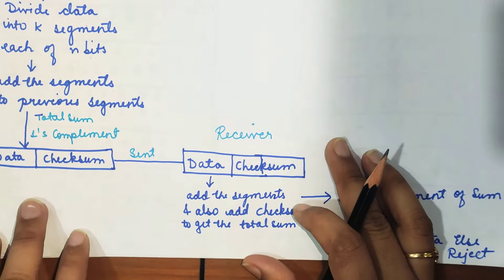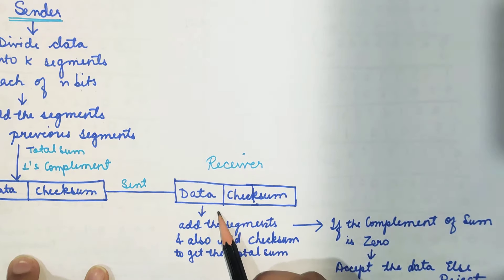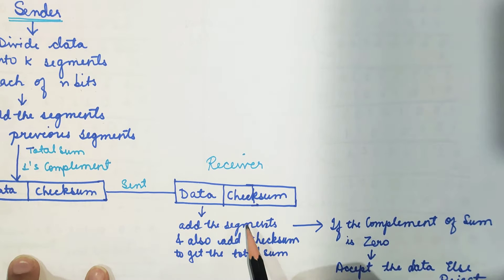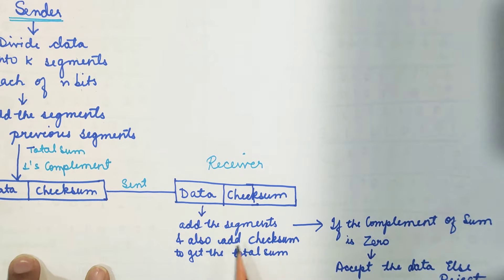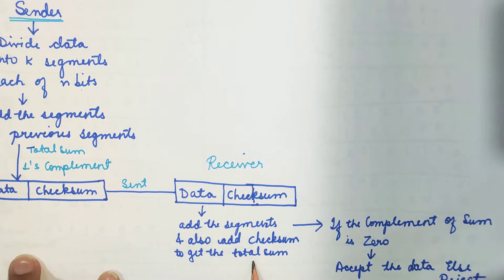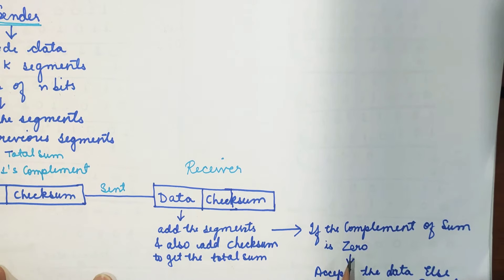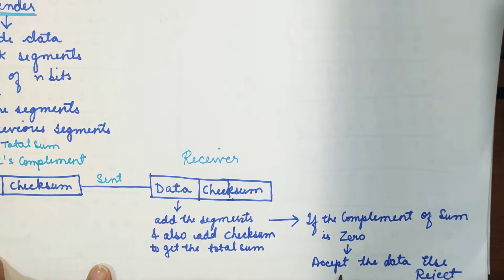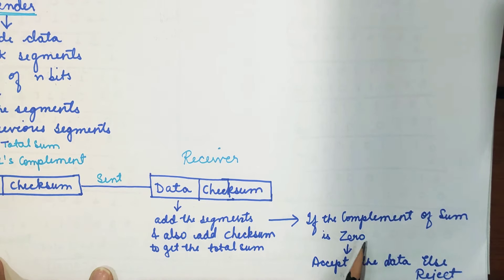Now what is happening at the receiver side: once the receiver receives the data and the checksum, the same procedure is followed — it adds all the blocks or segments and also adds the checksum to get the total sum. If the complement of the sum is zero, it is going to accept the data, else it is going to reject the data. If the complement is zero, there is no error.